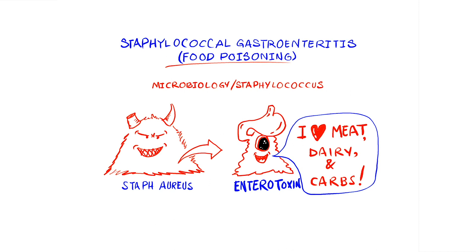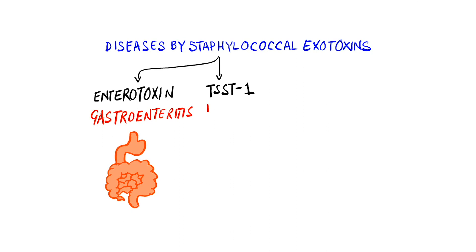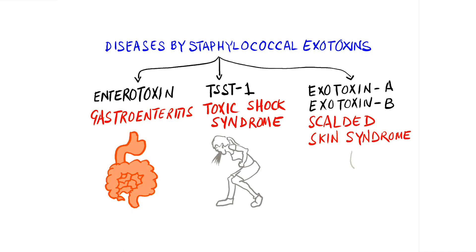As we have discussed before, the pathogen Staphylococci produce three kinds of exotoxins, and these exotoxins in turn cause three types of diseases: Staphylococcal gastroenteritis, Toxic Shock Syndrome, and Scalded Skin Syndrome. All three are caused by exotoxins. We have already discussed Scalded Skin Syndrome and Toxic Shock Syndrome. Today, we are going to be discussing the pathophysiology and management of gastroenteritis.